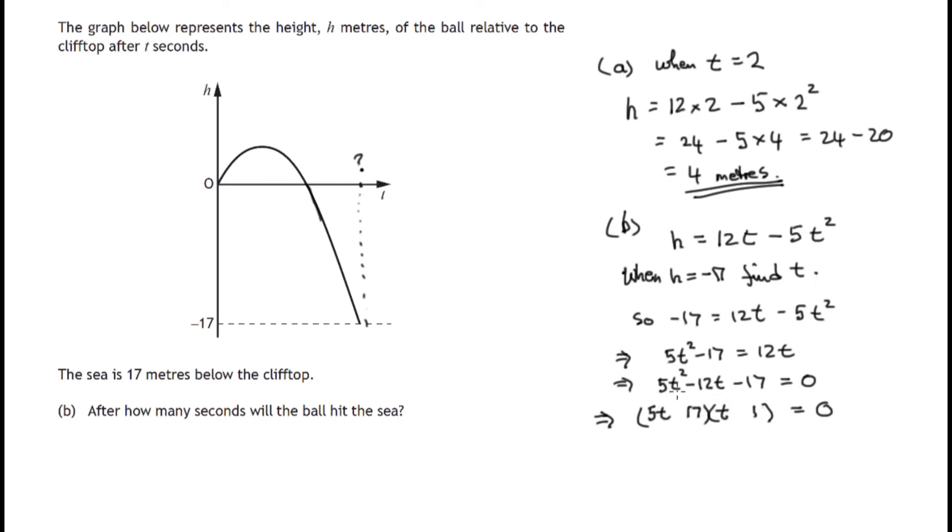And at this stage we're looking at the outside two terms and the inside two terms. If we multiply the outside two terms we get 5t. If we multiply the inside two terms we get 17t.